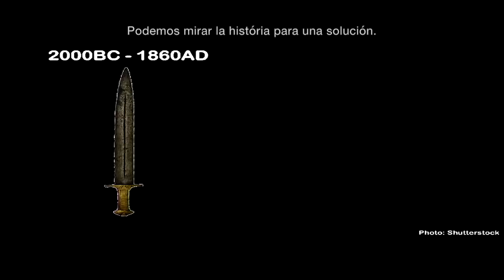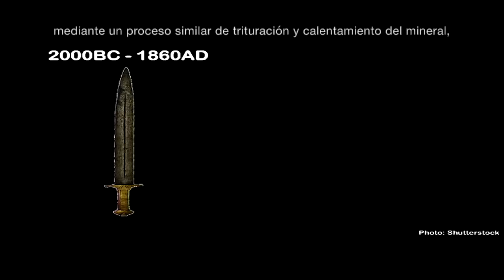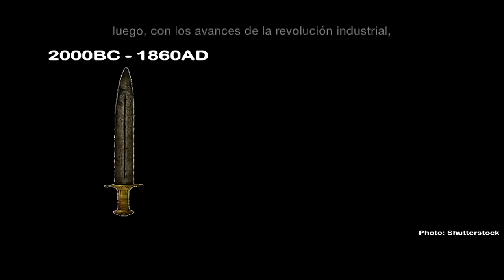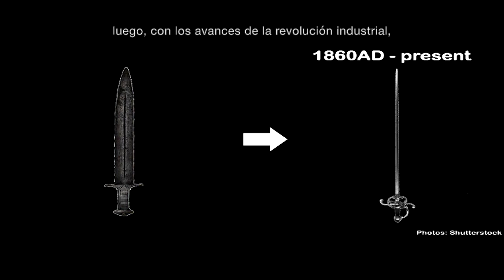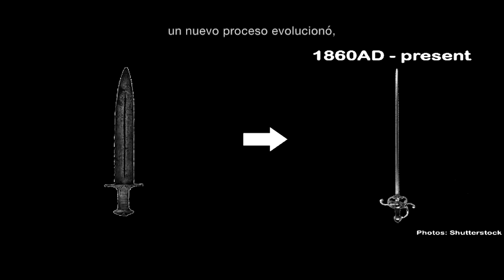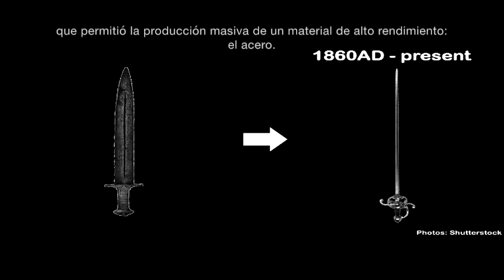We can look to history for a solution. For over 3,000 years, iron was produced through a similar process of crushing and heating of ore. Then, with the technological advances of the Industrial Revolution, particularly in the areas of chemistry and physics, a new process evolved which allowed for the mass production of the high-performance material, steel. Steel revolutionised the machines that we made and the cities we built.